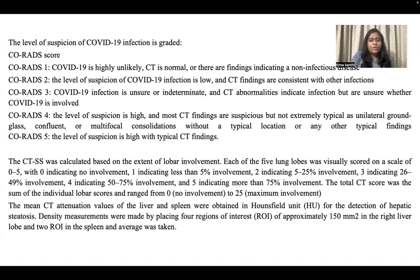Each of the five lung lobes was visually scored on a scale of 0 to 5: 0 indicating no involvement, 1 indicating less than 5%, 2 indicating 5 to 25%, 3 indicating 26 to 49%, 4 indicating 50 to 75%, and 5 indicating more than 75% involvement. The total CT score ranged from 0 to 25. The mean CT attenuation values of the liver and spleen were obtained in Hounsfield units for detection of hepatic steatosis, using four regions of interest of approximately 150 mm² in the right lobe of the liver and two regions of interest in the spleen.